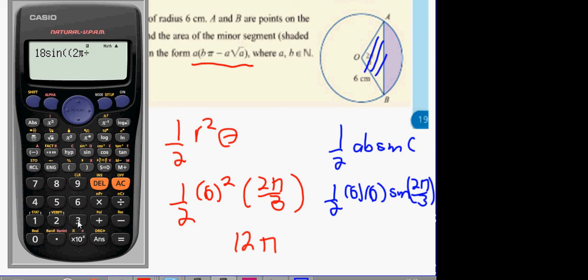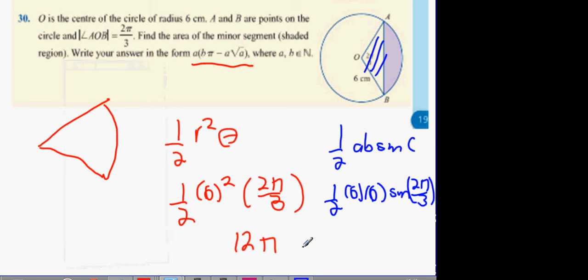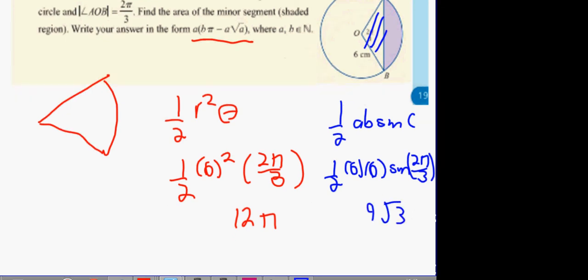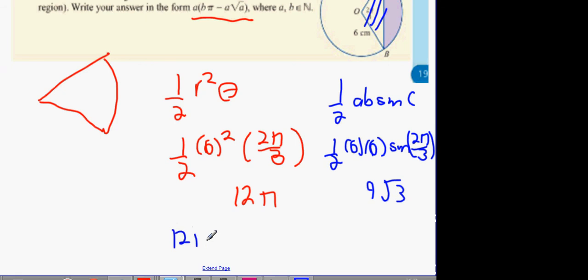And what did we get for that? 9 root 3. This one's 9 root 3. Add them together. And we get 12π plus 9 root 3. Sorry, 12π minus 9 root 3 because you're taking away the triangle from the sector.